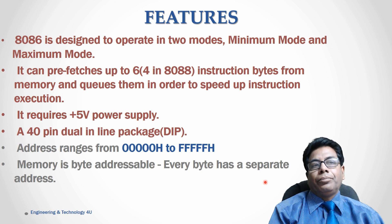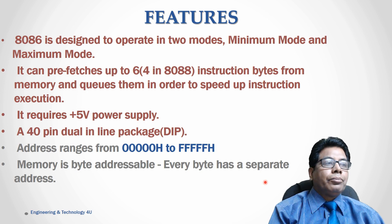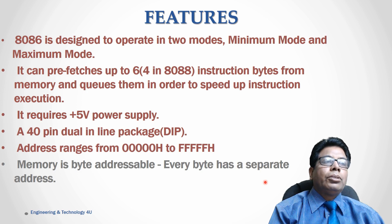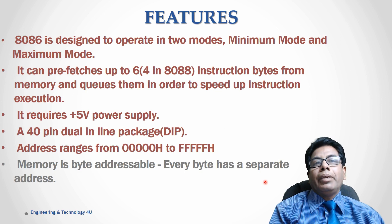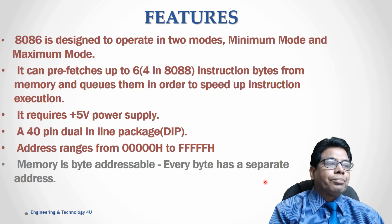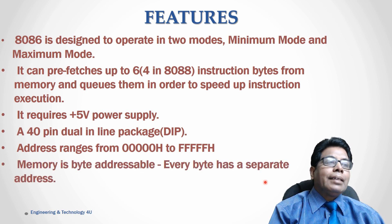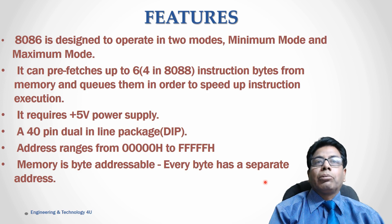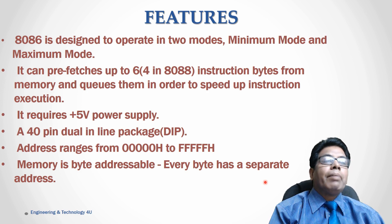It is a 40-pin dual in-line package IC. The address range is from 00000H to FFFFFH, giving a total 1 MB address space. Memory is byte-addressed — every byte has a separate address, so even though this is a 16-bit processor, the memory is byte-addressed.